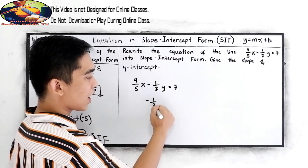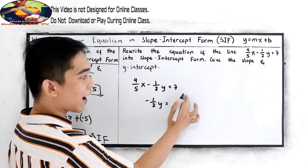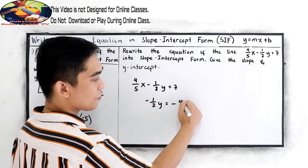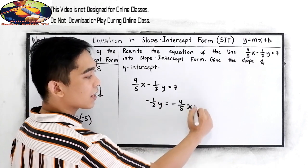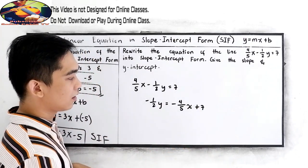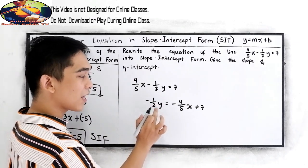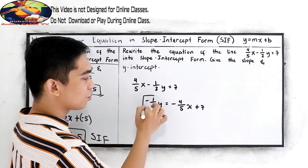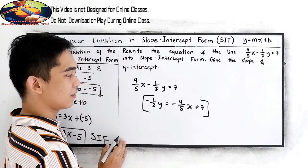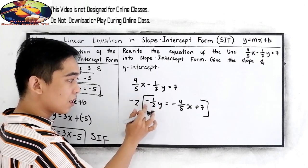So, negative 1 half y is equal to — we need to move the x term to the right using the addition property of equality. Move and change the sign: negative 4 over 5x, then plus 7. Now we only need y on the left side, so we need to multiply our equation by negative 2, the reciprocal of negative 1 half.